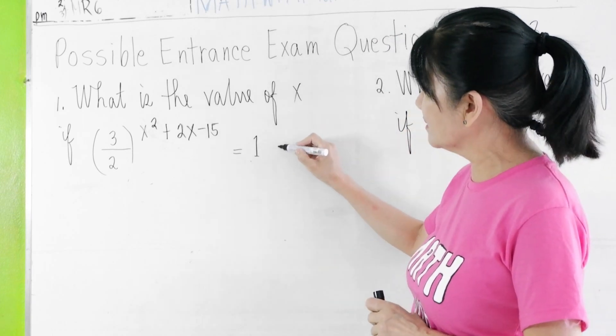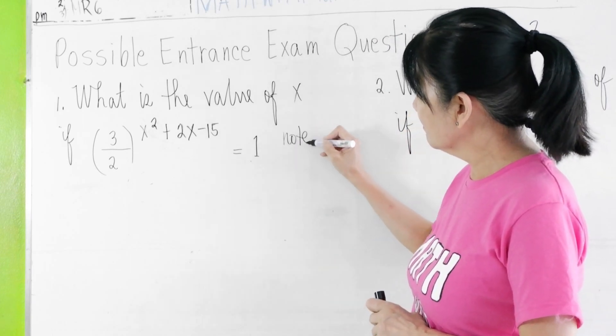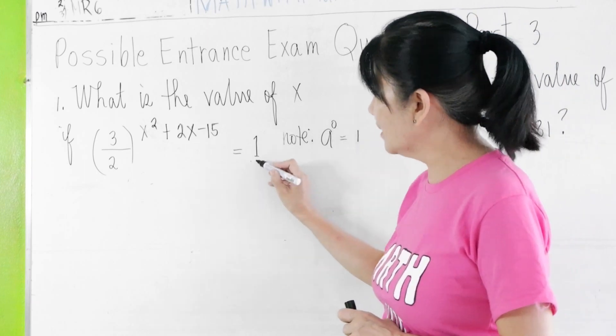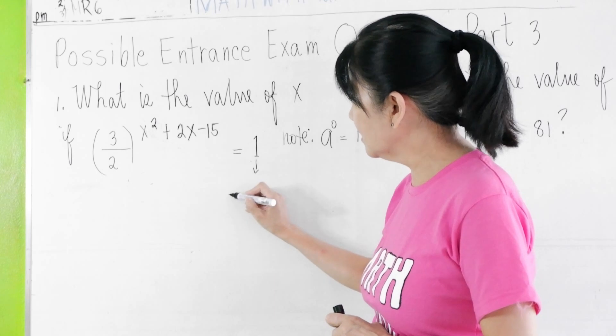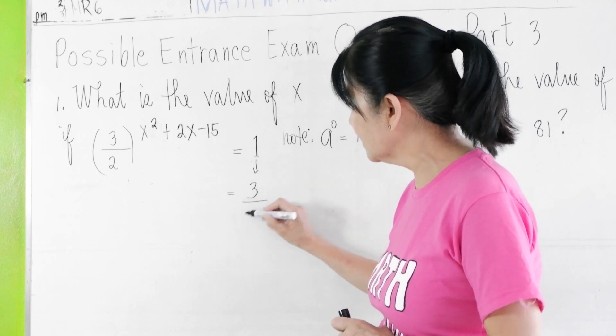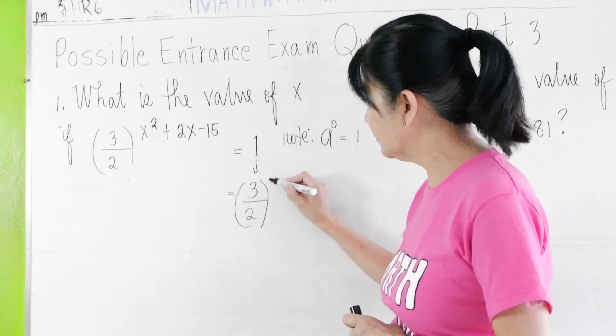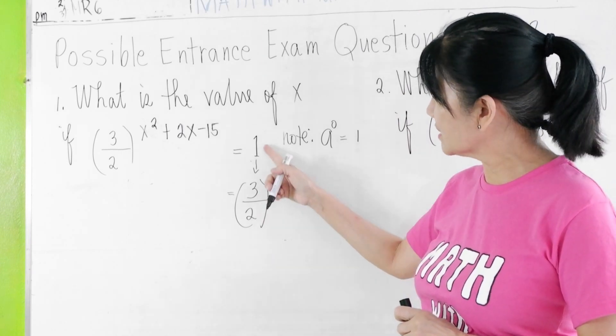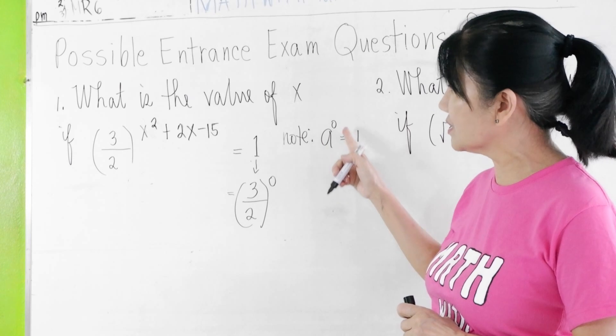and you know that a raised to 0 is equal to 1, then you can make this equal to (3/2)^0. (3/2)^0 is equal to 1 because anything raised to 0 is 1.